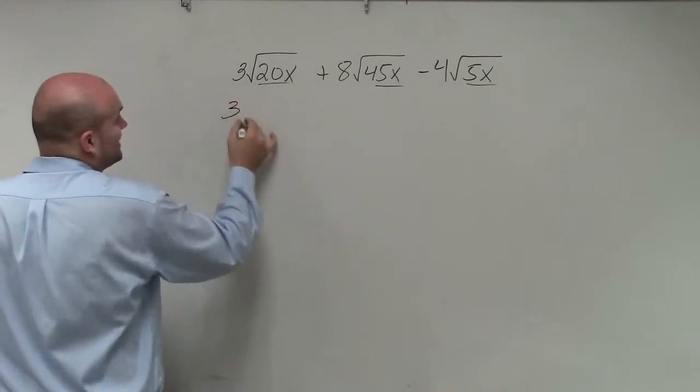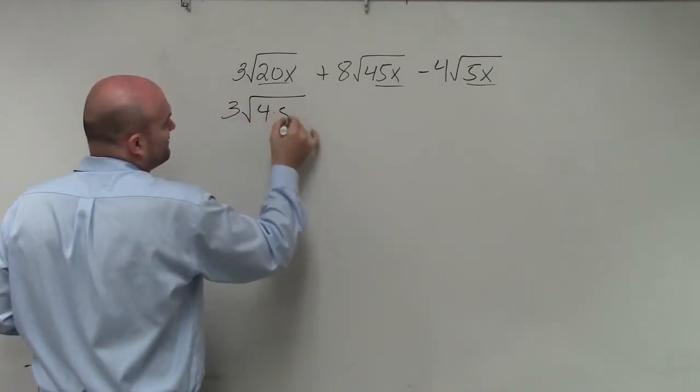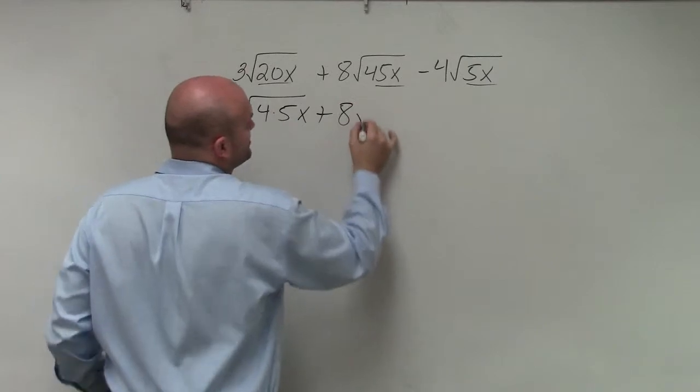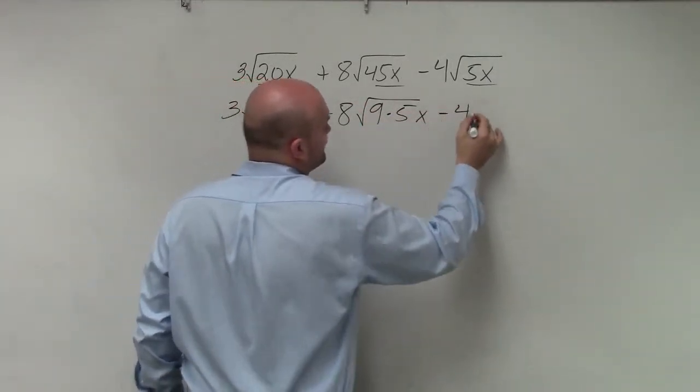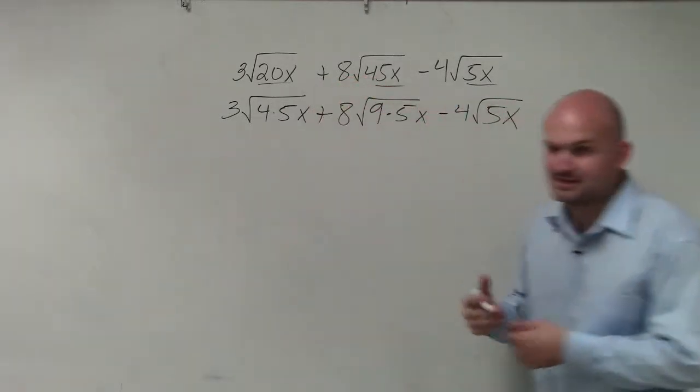I'm going to basically say 3 times the square root of 4 times 5x plus 8 times the square root of 9 times 5x minus 4 square root of 5x, where I can't simplify 5x.